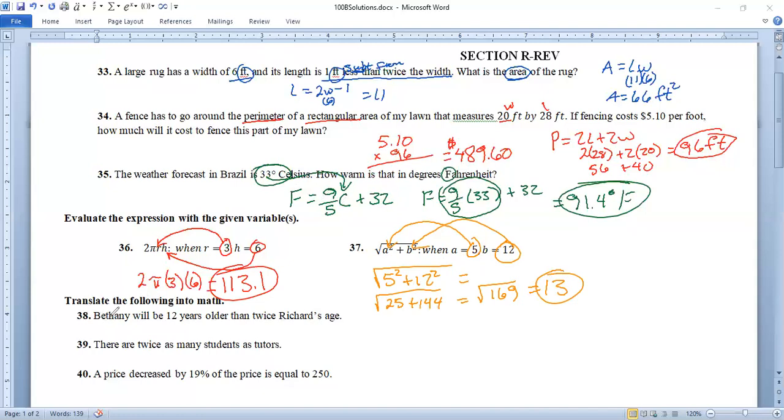So 38 B, Bethany, we're going to translate the following into math. Bethany will be, so there's your equal sign 12 years older. That's a plus sign. Then twice, two times Richard's age. So we would write as Beth equals, Bethany equals 12 plus two R and that's multiplication.